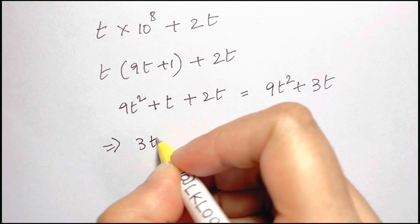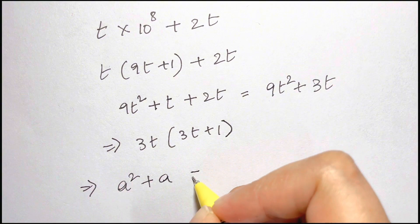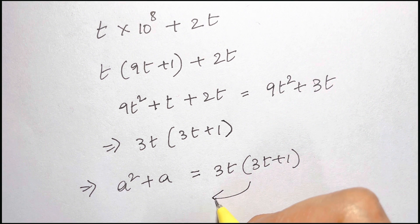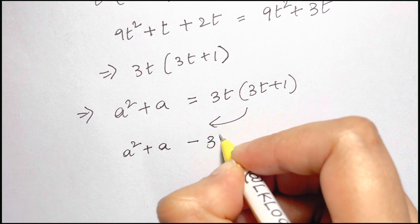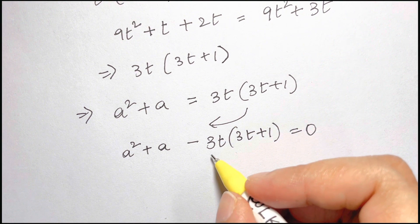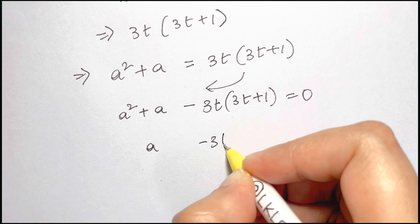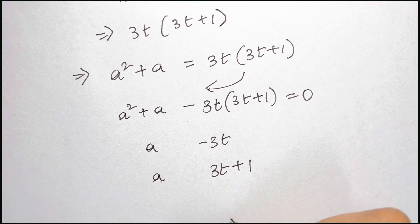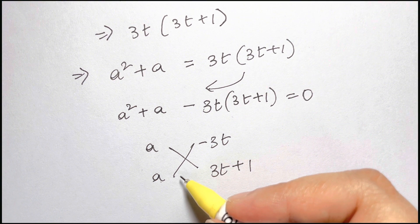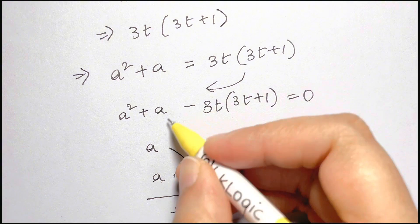Now I can take 3t common, so it's 3t(3t + 1). This equation — a² + a, which we are solving — is equal to 3t times (3t + 1). Bringing this term to the left side: a² + a − 3t(3t + 1) = 0. When you are solving, the product should be −3t(3t + 1) and the sum should be +1. When you cross multiply, a(3t + 1) − a(3t) gives you a + a, and this is what we get.